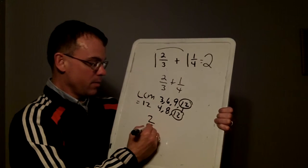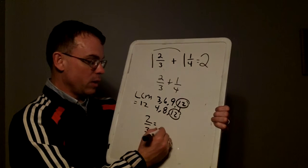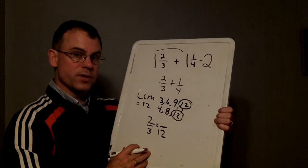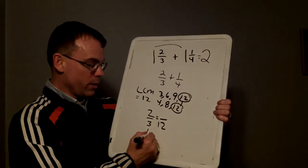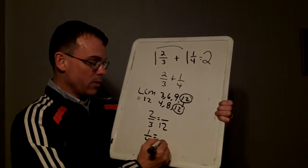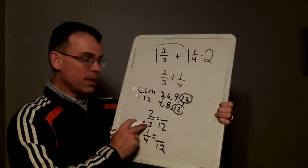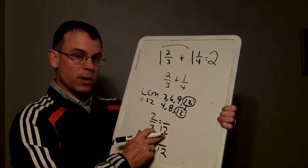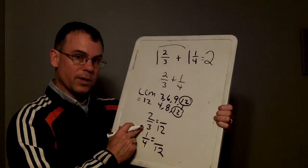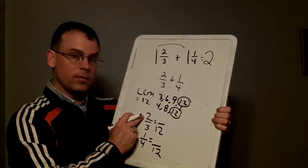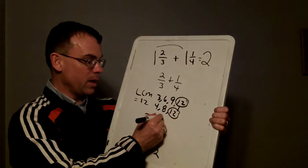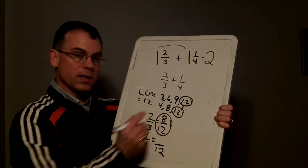Taking two-thirds and changing it to twelfths is my first step. One-quarter change to twelfths will be my second step. What did I do to the three to change it into a twelfth? Well, I would need to multiply by four. Similarly, two times four would give me eight. My new fraction is eight twelfths.